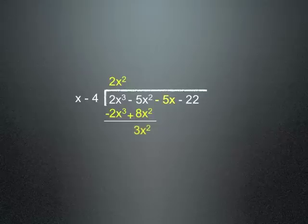Now I'm gonna take that negative 5x and I'm gonna drop it down. Now I want to know what times x is equal to 3x squared. And in this case it is plus 3x. So we take 3x times x and we're gonna put it right there. So we have 3x squared again. And of course 3x squared minus 3x squared is equal to zero.